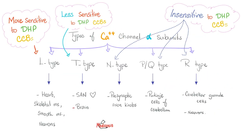Calcium channels have many varieties: L-type, T-type, N-type, P/Q-type, R-type — this refers to the alpha subunit. L-type channels are more sensitive to dihydropyridine calcium channel blockers such as nifedipine, amlodipine, nimodipine, etc. T-type channels are not sensitive to dihydropyridines — that's why verapamil works on the T-type heart channels, but nifedipine does not, relatively speaking.